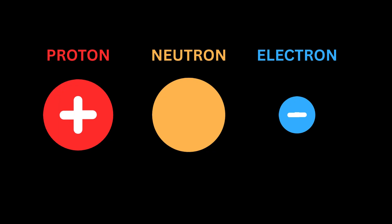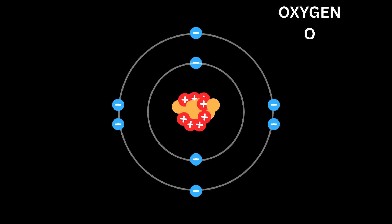In a neutral state, an atom has an equal number of electrons and protons. For example, an oxygen atom has eight protons, eight electrons, and eight neutrons.